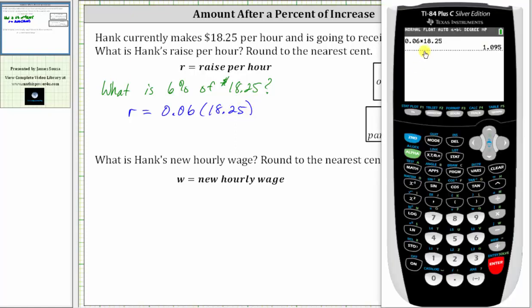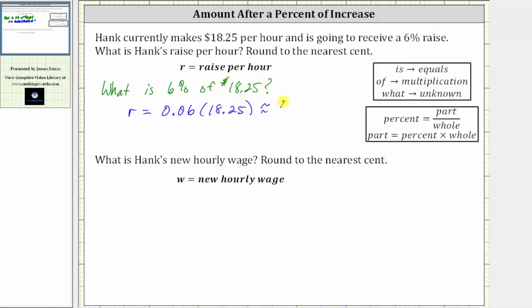0.06 times 18.25 is equal to 1.095. We're told to round to the nearest cent. Because we have a 5 in the thousandths place value, we round up by adding 1 to 9. 9 plus 1 is 10. We perform an exchange, which gives us 1.10. So the raise is approximately $1.10 per hour.